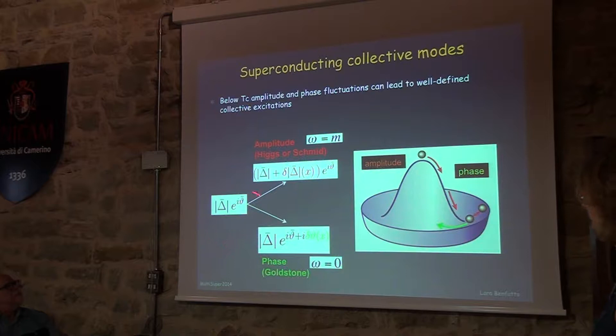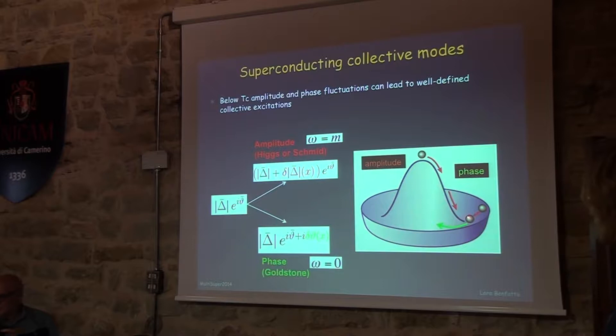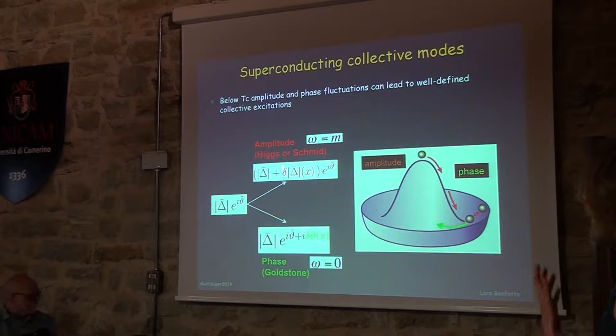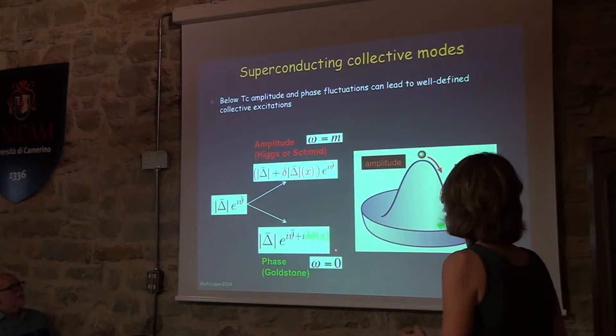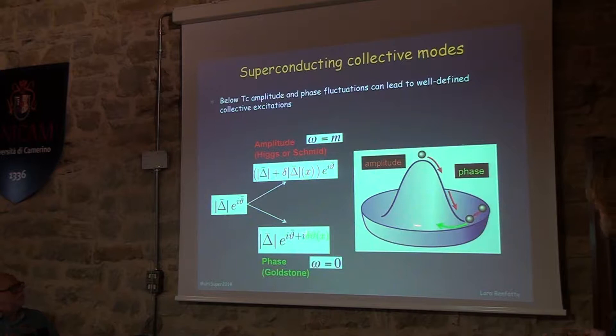When we are in the broken symmetry state, the superconducting order parameter has a finite value, and you can have both amplitude and phase fluctuations around that. Amplitude fluctuations correspond to moving the system away from the minimum of the Mexican hat potential, so they cost energy. This is a massive mode, which very recently has been named the Higgs mode — in the past it was called the Schmidt mode, but now it's becoming popular as the Higgs mode because it is simply massive. The other possible fluctuation is the phase fluctuation, where we move the system around the various minima of the potential — it costs no energy at long wavelength — and this corresponds to the Goldstone mode of the transition.